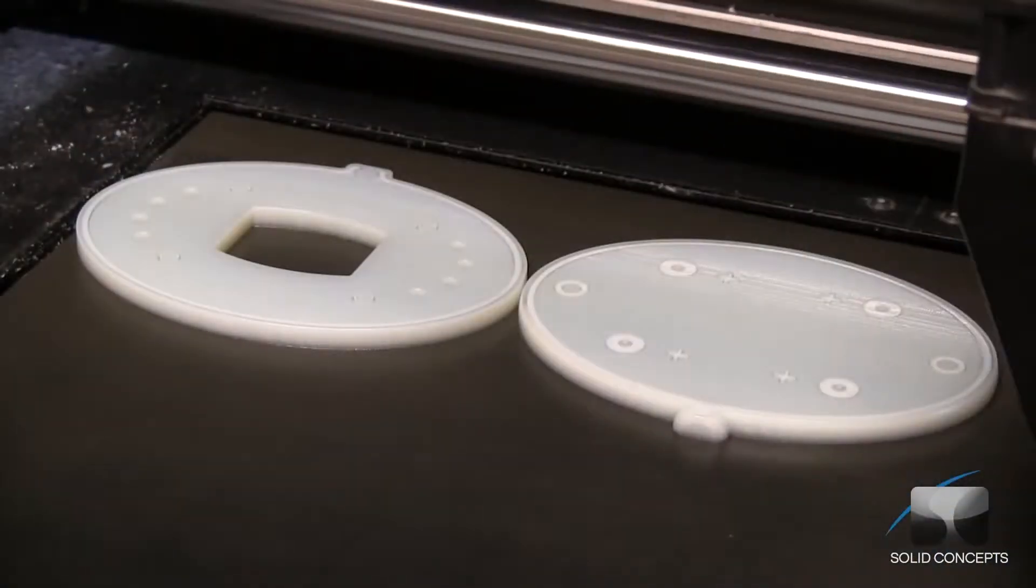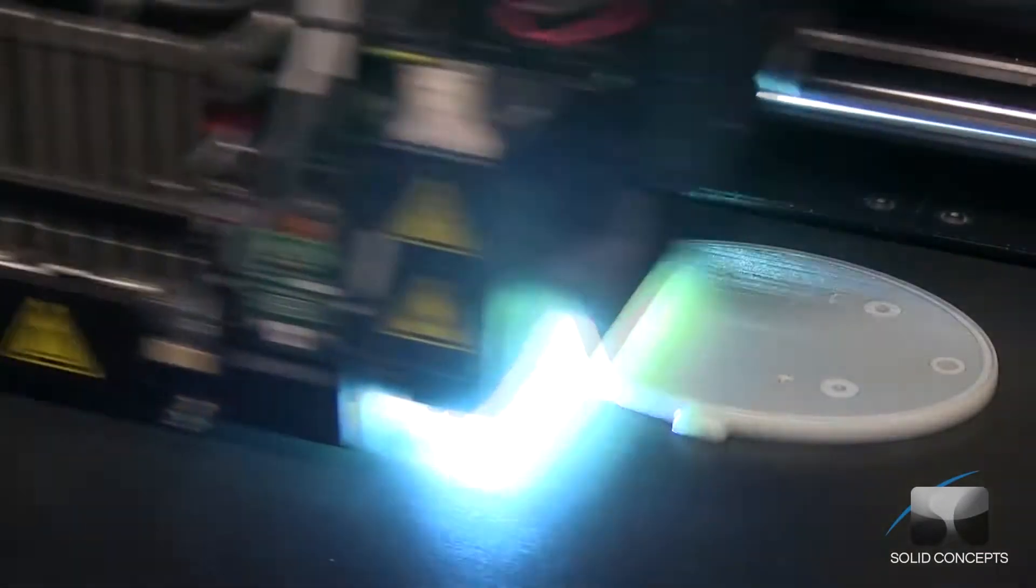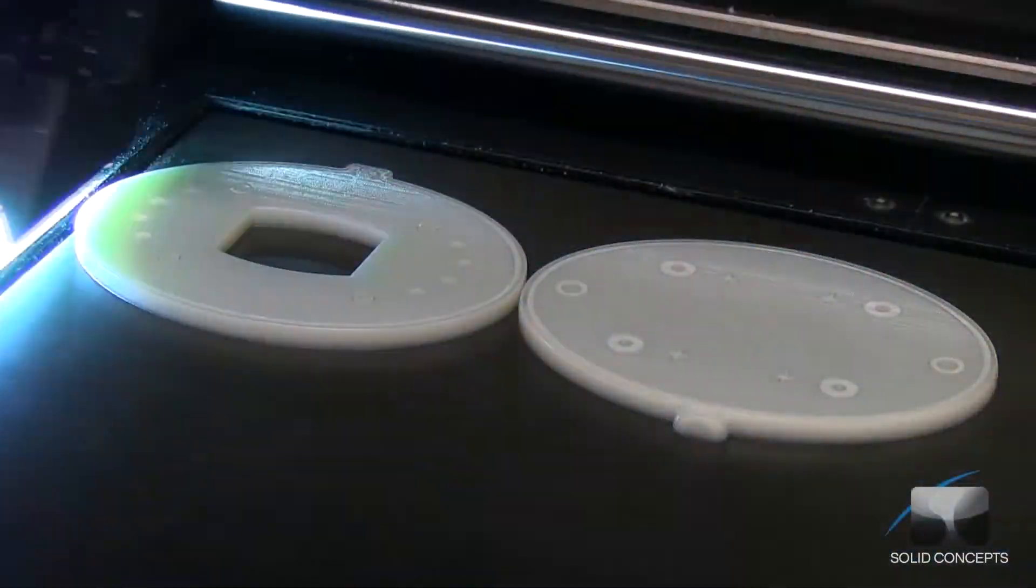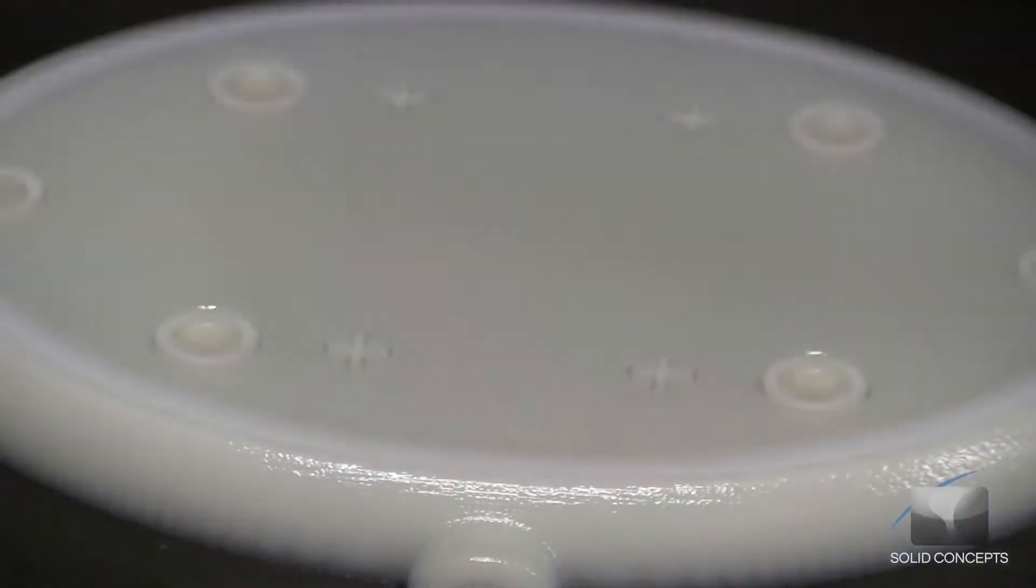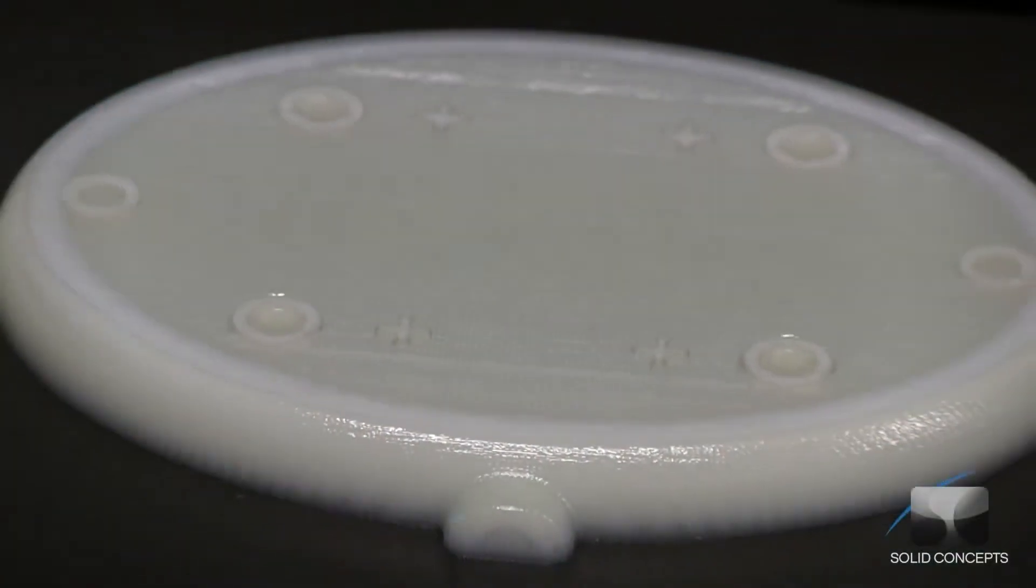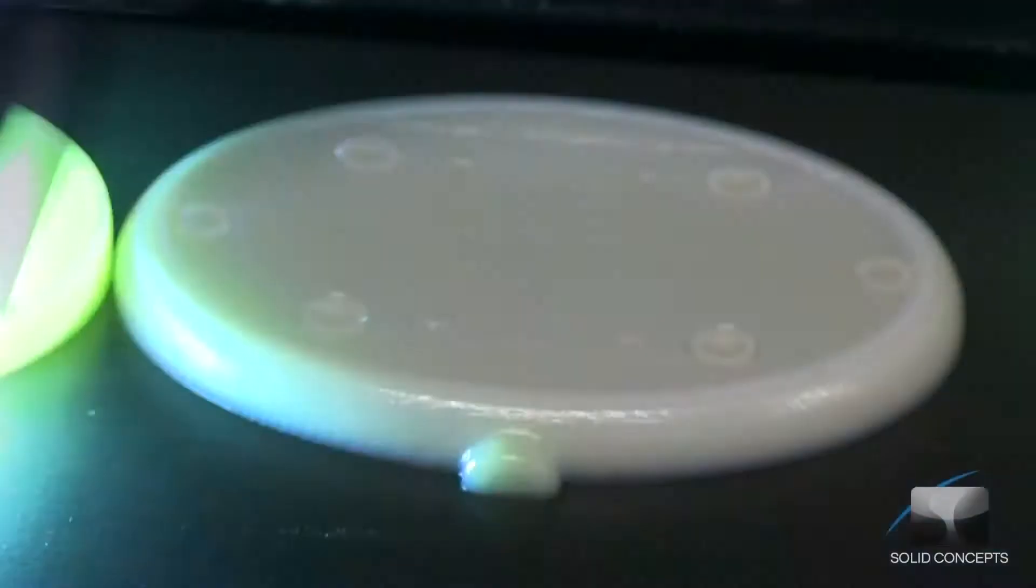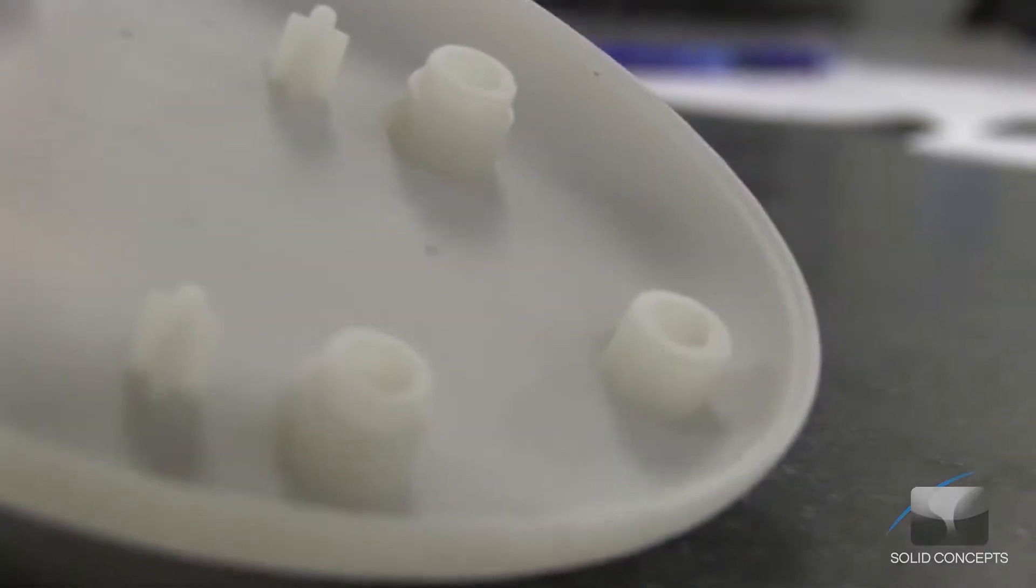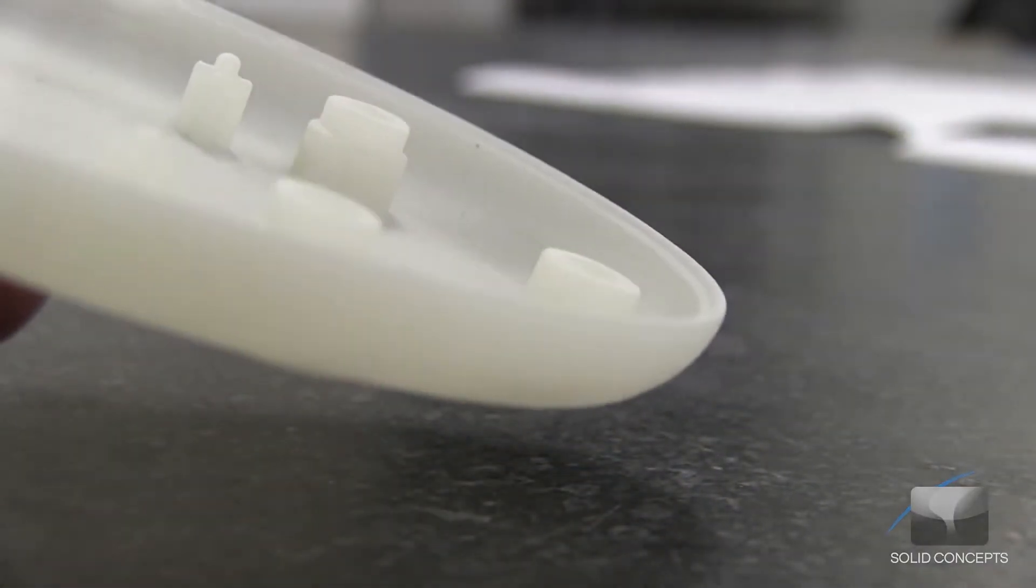PolyJet is a layer additive manufacturing technology used to develop plastic prototypes from 3D CAD data. This rapid prototyping process uses inkjet technology combined with UV curable materials to quickly and economically produce highly detailed and accurate physical prototypes.